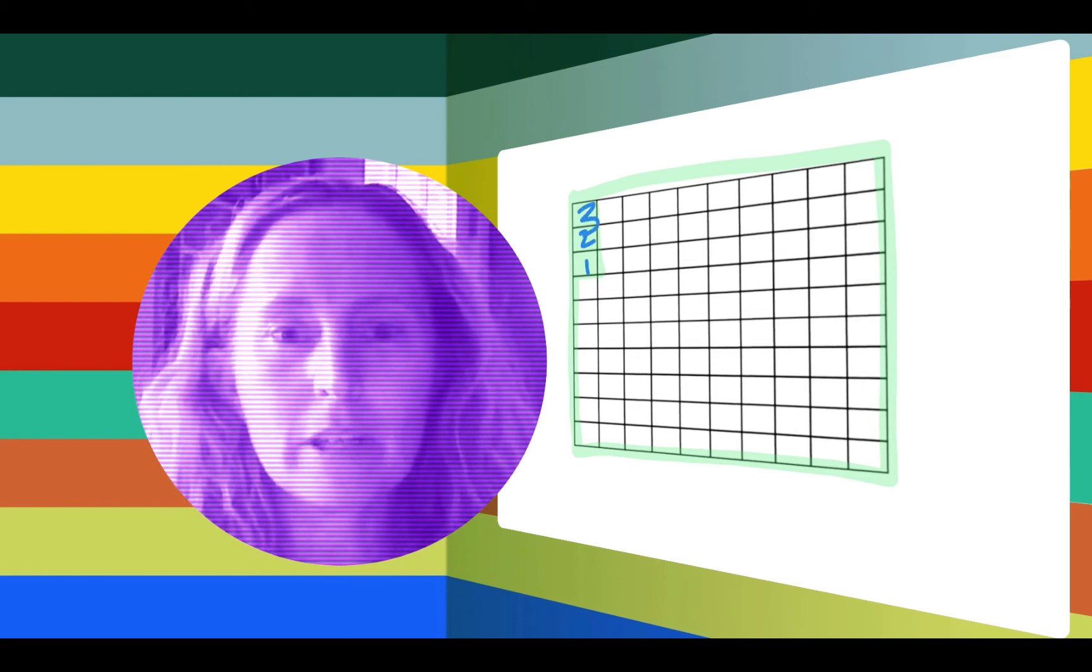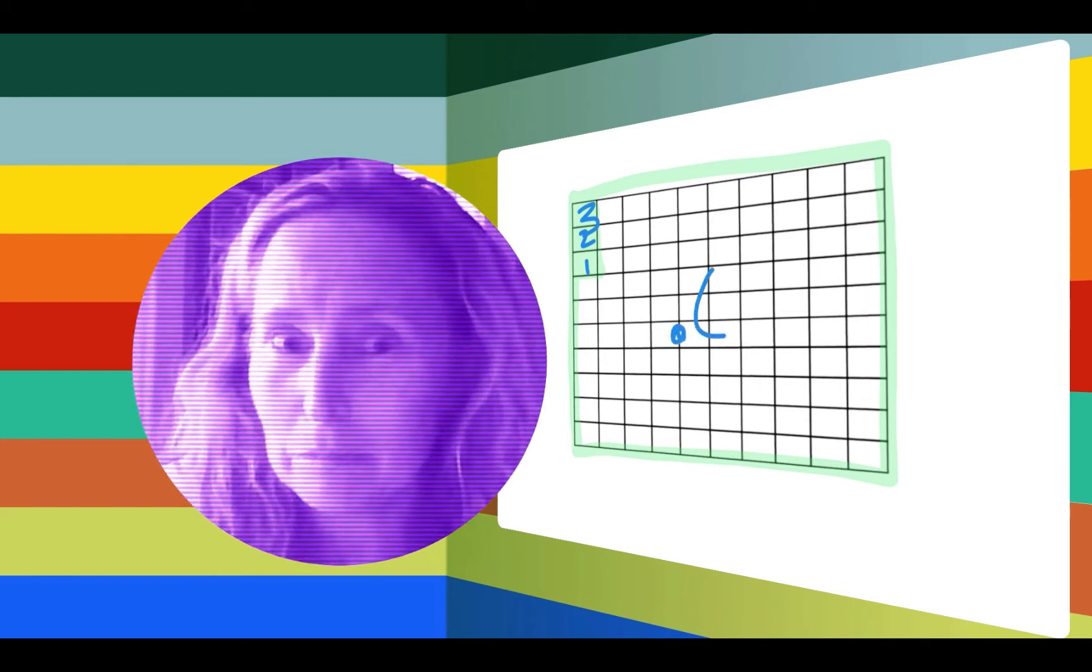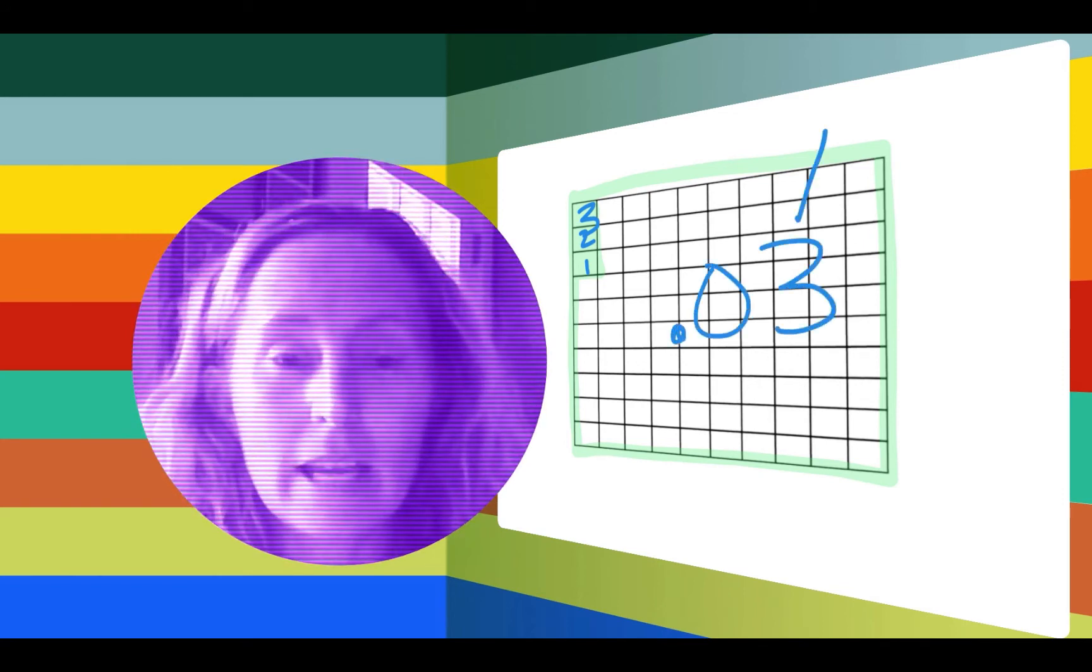A lot of kids will just put 0.3 because they think, 'Oh, it's a decimal and I have three of them.' But you don't have three dimes, you have three pennies, and so you'll be relying on those very important place-holding zeros as you go along the way.